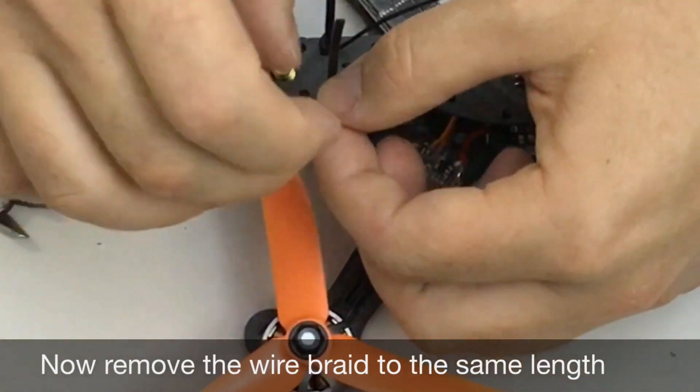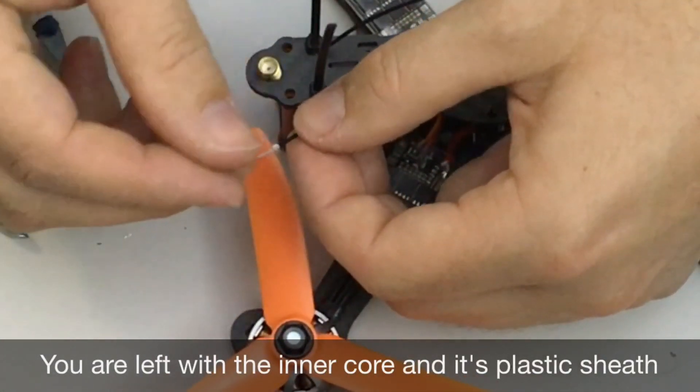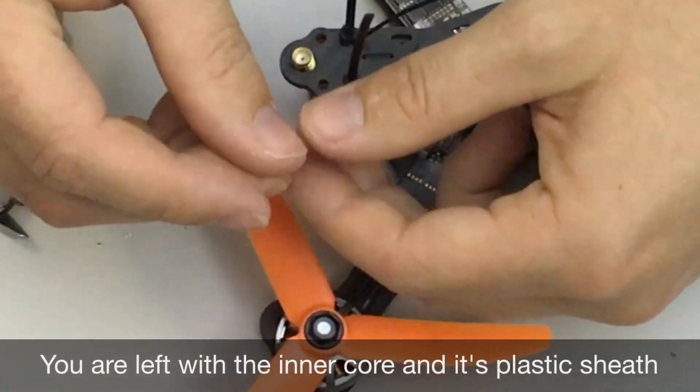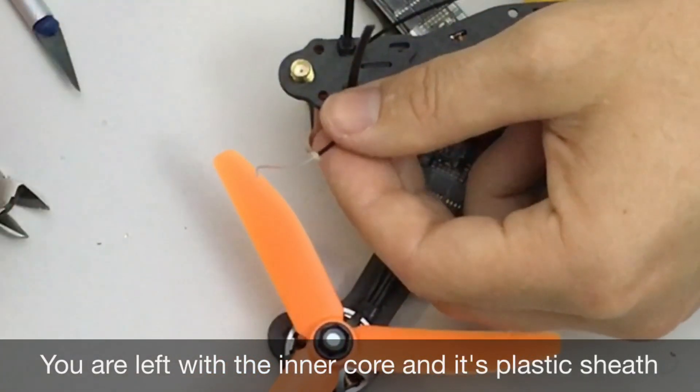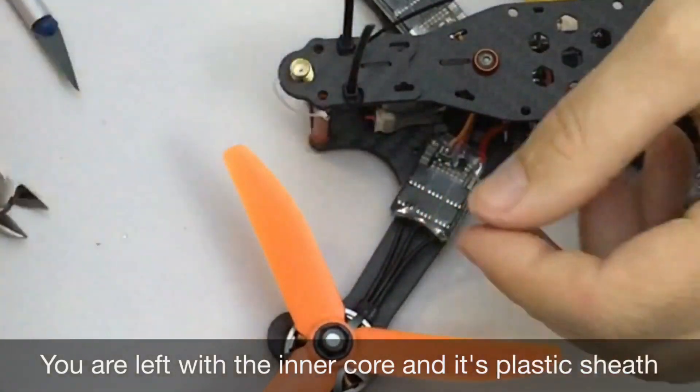And all I'm doing is cutting through the outer cable. Now remember this is conductive. So the last thing you want is this falling down onto your flight controller or something else. So be aware of where the little bits and pieces end up. And once that's out of the way, so that's just the sheath around it.